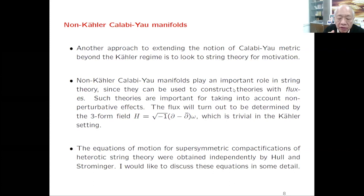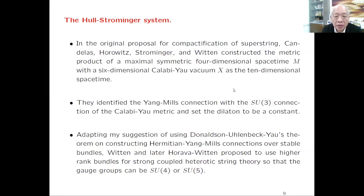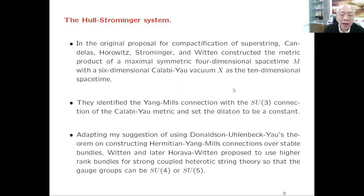The equations of motion for supersymmetric classification of heterotic string theory were obtained independently by Chris Hull and Andy Strominger. In the original 1984 proposal for the classification of supersymmetric theory, Candelas, Horowitz, Strominger, and Witten construct a metric product: a 10-dimensional spacetime built as a four-dimensional Minkowski spacetime product with a six-dimensional Calabi-Yau vacuum. This six-dimensional manifold is the way to compactify the 10-dimensional spacetime to a four-dimensional one.